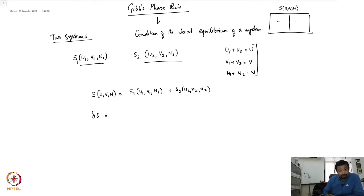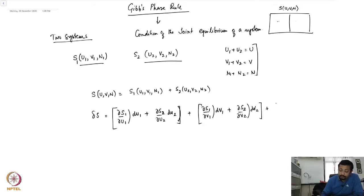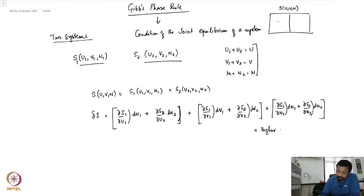Any change in this entropy near the joint equilibrium can be calculated as: dS = (∂S1/∂U1)dU1 + (∂S2/∂U2)dU2 + (∂S1/∂V1)dV1 + (∂S2/∂V2)dV2 + (∂S1/∂N1)dN1 + (∂S2/∂N2)dN2, plus higher order terms which we ignore because we are infinitesimally close to the joint equilibrium point.